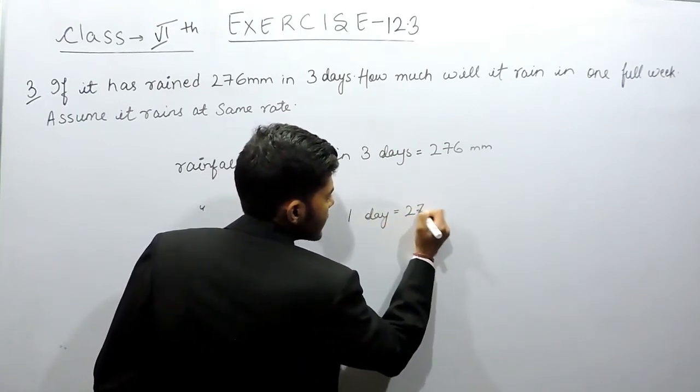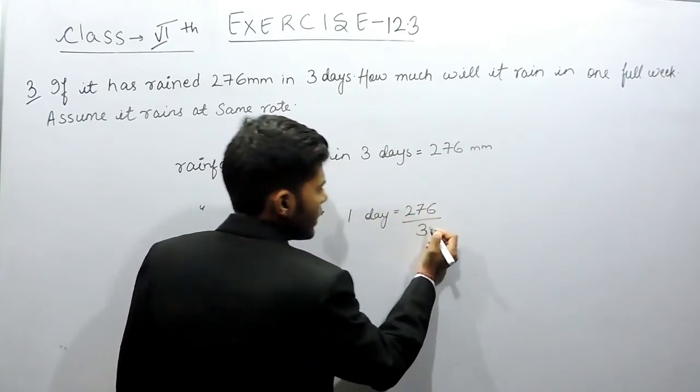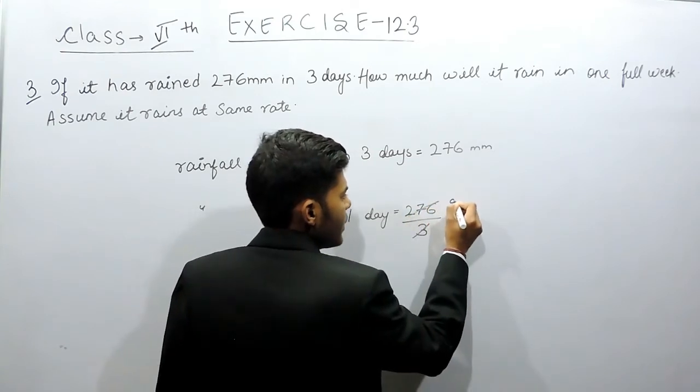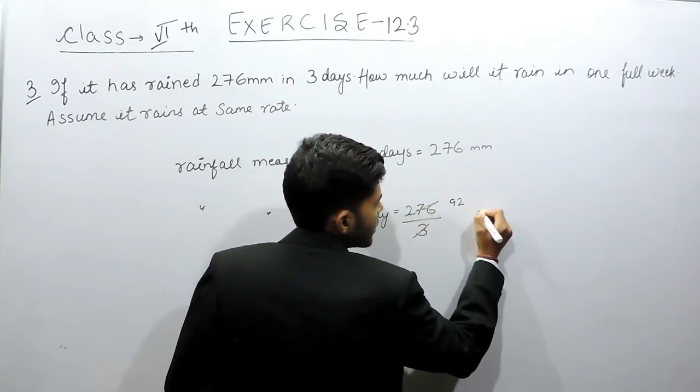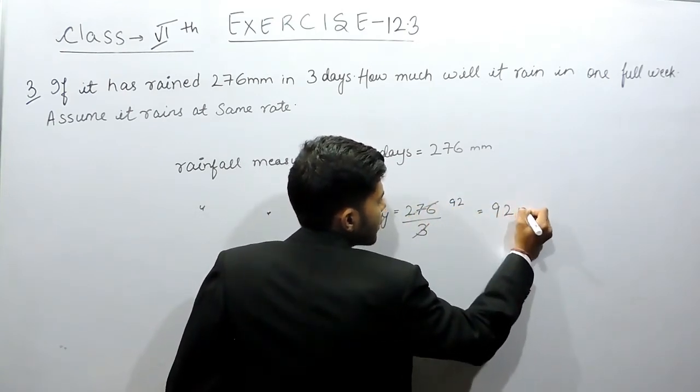Okay, that will be equals to 276 by 3, 3, 9 times 27, 3, 2 times 6. So that will be equals to 92 mm.